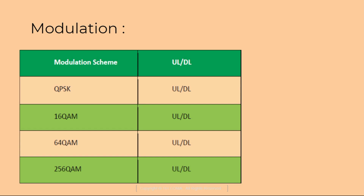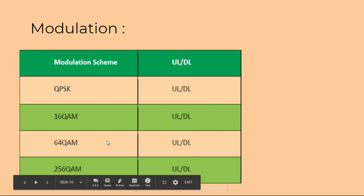New modulation schemes such as 256 QAM also need to be modeled properly. In 4G, QPSK, 16 QAM, and 64 QAM were used for uplink and downlink. Now 256 QAM is a new modulation scheme in 5G NR that also requires modeling.